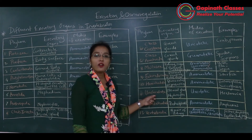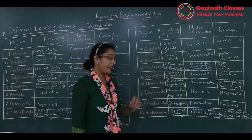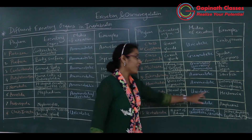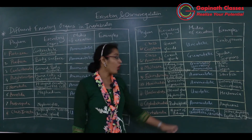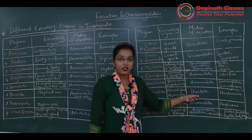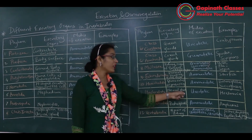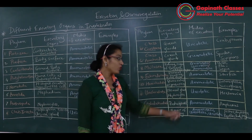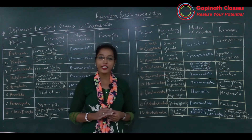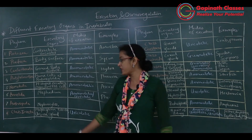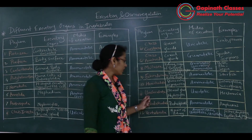Coming to the subphylum Urochordata — urochordates such as Herdmania excrete nitrogenous waste in the form of uric acid. The excretory organs are neural glands and nephrocytes. Nephrocytes are specialized cells for removal of uric acid, and they are also seen in class Insecta.